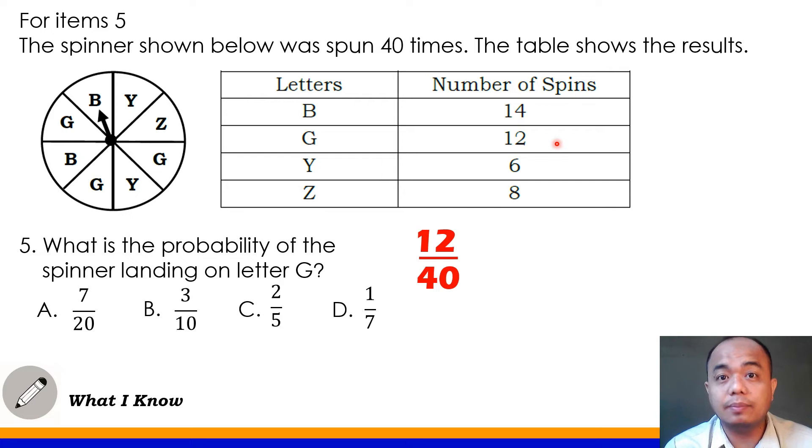So same din sa ginawa natin sa number 4. I-reduce natin siya sa lowest term at para magawa yan, we will find their GCF or greatest common factor. What is the GCF of 12 and 40? Yung pinakamalaking number class na pwede natin gawing divisor sa 12 at saka 40. Yes, very good. That's 4. So i-divide natin ang numerator at ang denominator sa 4. Para ma-reduce siya sa lowest term. Now 12 divided by 4 is equal to 3, right? And then 40 divided by 4 is equal to 10. So ang ibig sabihin ng probability ng spinner landing on letter G is 3 over 10. So the correct answer for number 5 is letter B, 3 tenths.